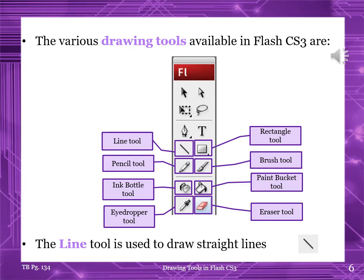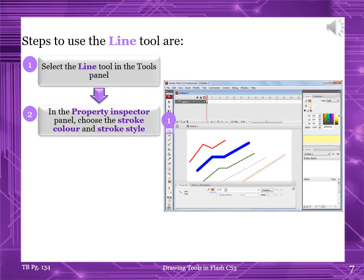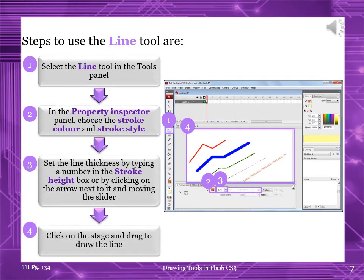The line tool is used to draw straight lines. Steps to use the line tool: In Paint you can also draw lines, and in the same way we will draw lines here in Flash CS3, but here we have a few advanced features available. Step 1: Select the line tool in the tool panel. Step 2: In the property inspector panel, choose the stroke color and stroke style. Step 3: Set the line thickness by typing a number in the stroke height box or by clicking on the row next to it and moving the slider. Step 4: Click on the stage and drag to draw the lines.